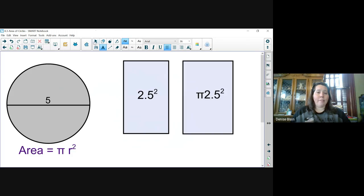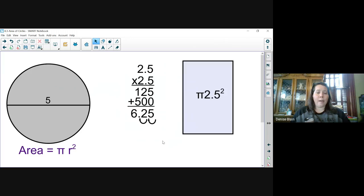So the first step in finding the area of our circle is taking the square of 2.5. So 2.5 times 2.5 is 6.25. Remember that we have one decimal place in our top factor, one decimal place in the second factor, so our product has to have a total of two decimal places.